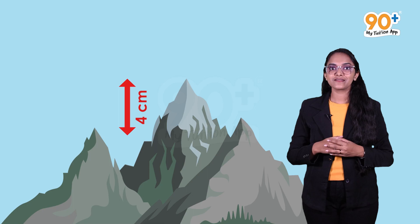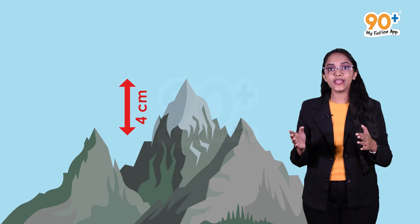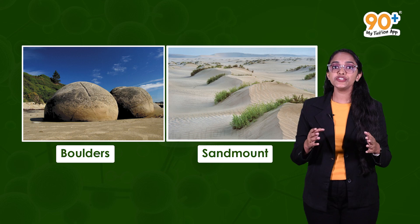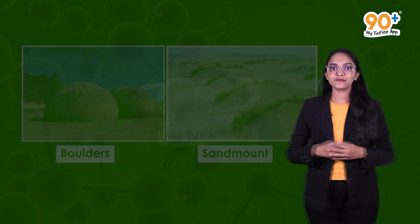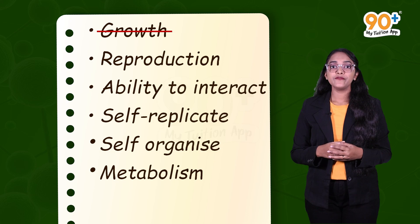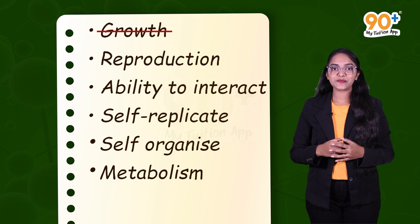Here is an interesting fact: Mount Everest is growing four centimeters every year. Most mountains, boulders, and sand mounts increase in their mass and height due to sedimentation. They are not living, but they grow. So growth cannot be considered as a defining characteristic of the living world, and we lose the first character from our list.